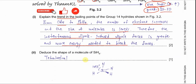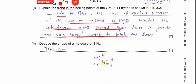Part two: deduce the shape of SiH₄. Silicon is bonded to four hydrogen atoms, so with four bonding pairs it must be tetrahedral, with a bond angle of approximately 109.5 degrees.